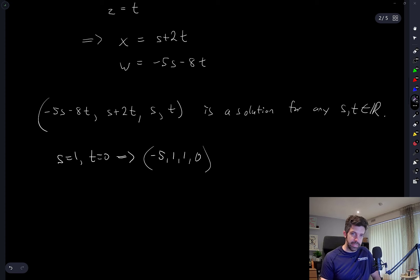And so it's also easy to see that negative 5, 1, 1, 0, well it is a solution, there we go, it's a solution corresponding to S equal 1 and T equal 0.